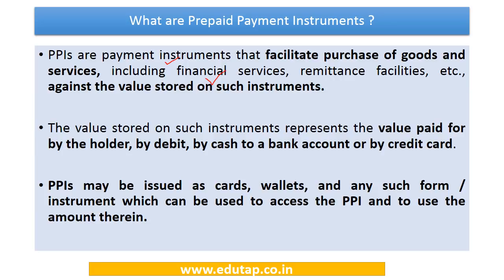Prepaid instruments, or PPIs, are a kind of payment instrument that you can use for making payments — to purchase goods and services. The scope of usage is very wide and includes financial services and remittance facilities. You can buy insurance products or remit money to someone else using the value stored on these instruments.